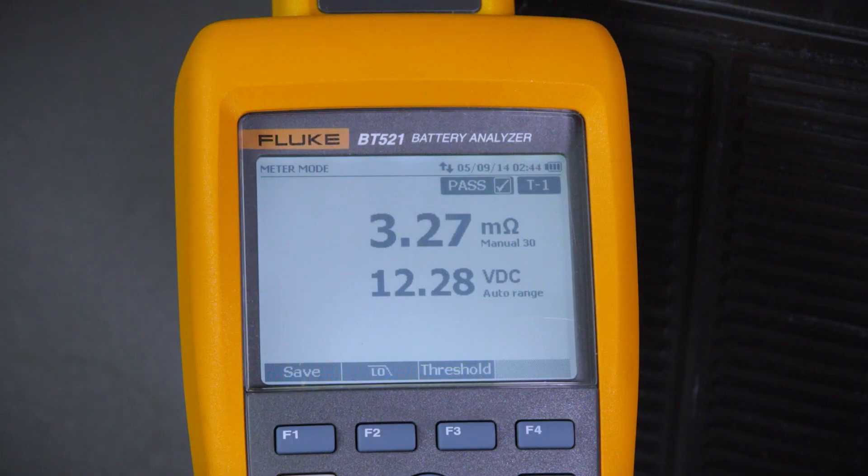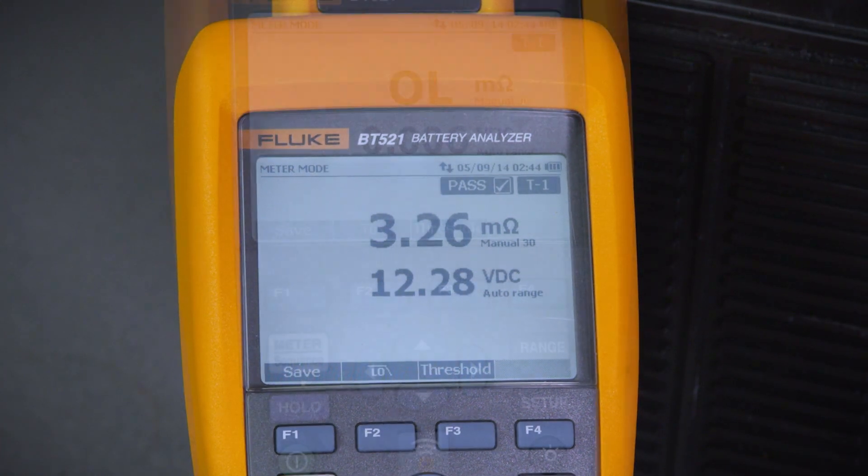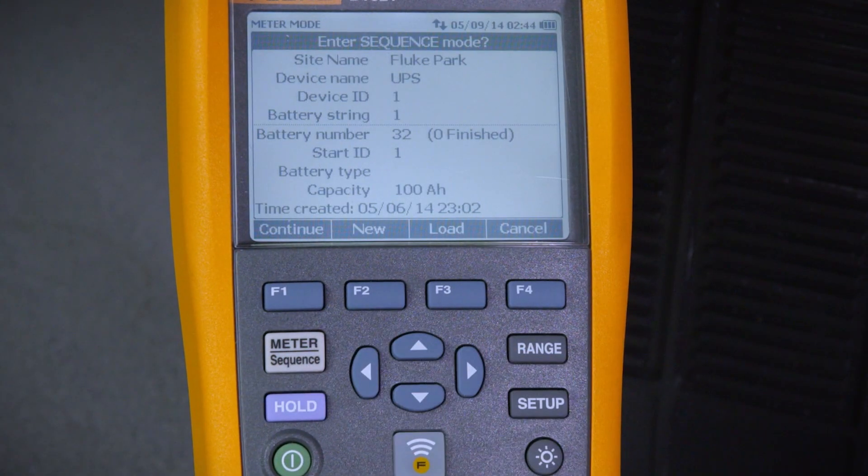You can see on the screen that you've successfully saved your measurement. Right now the instrument is in meter mode. Let's go to sequence mode by pressing the meter sequence button.